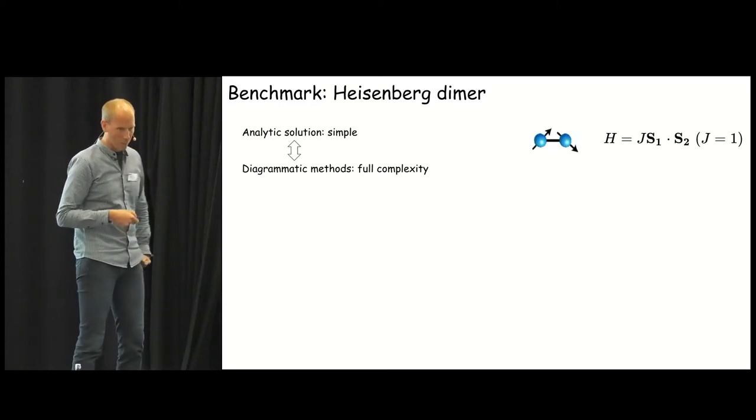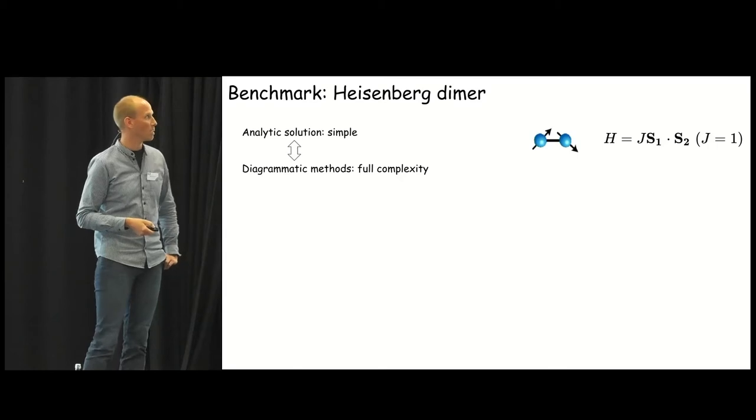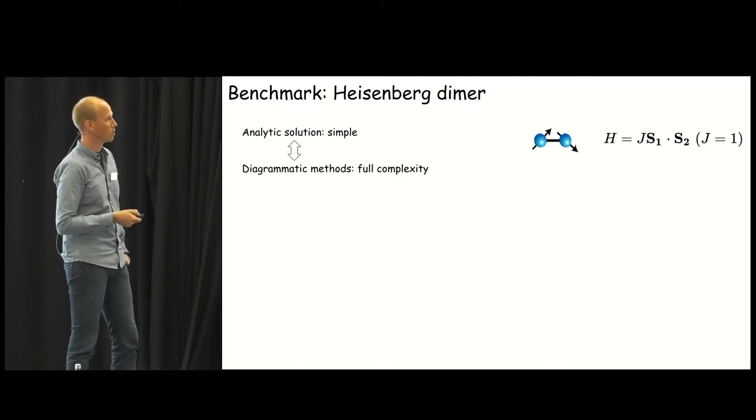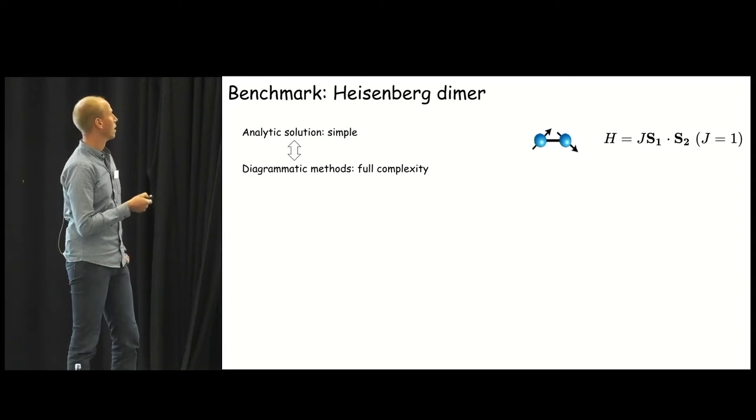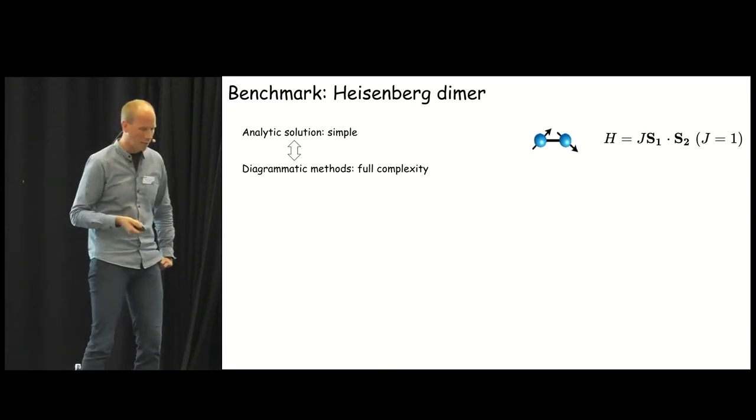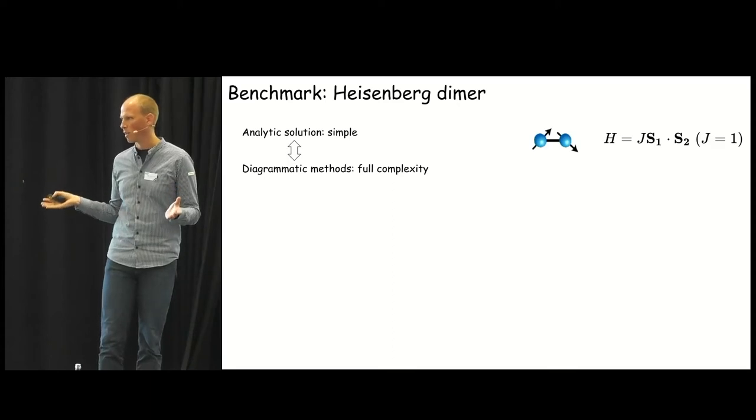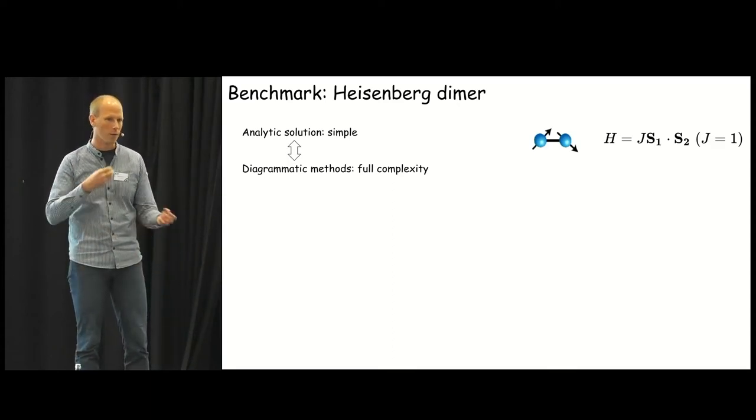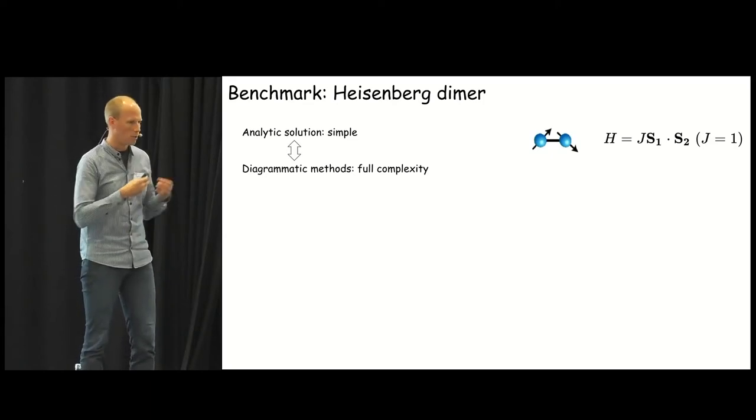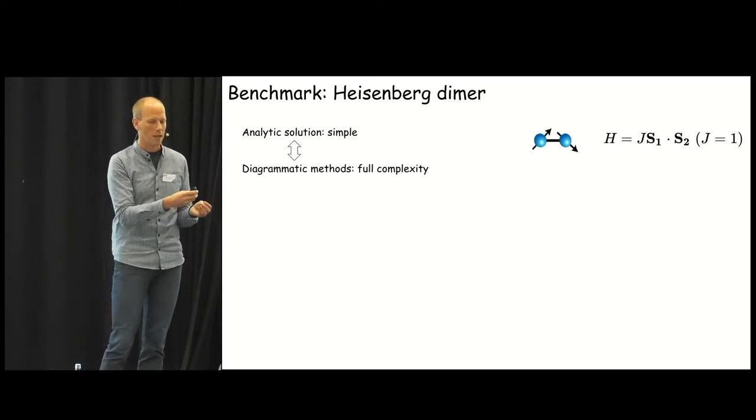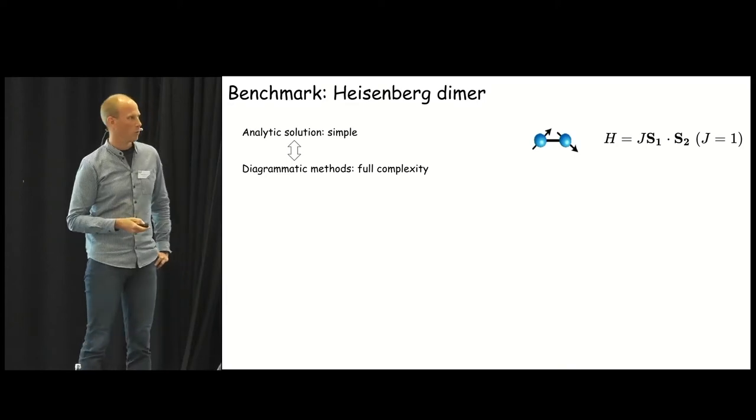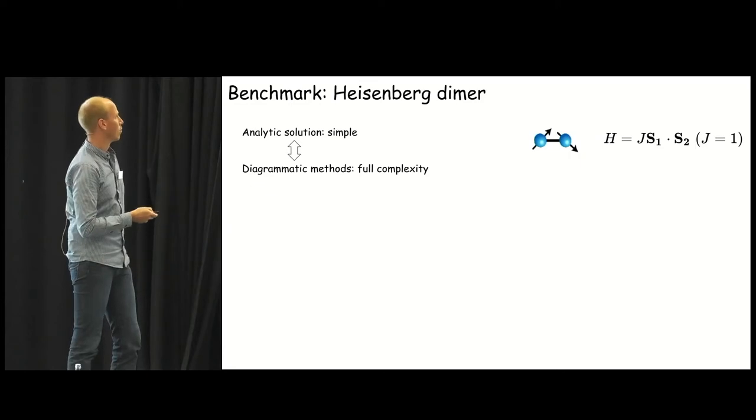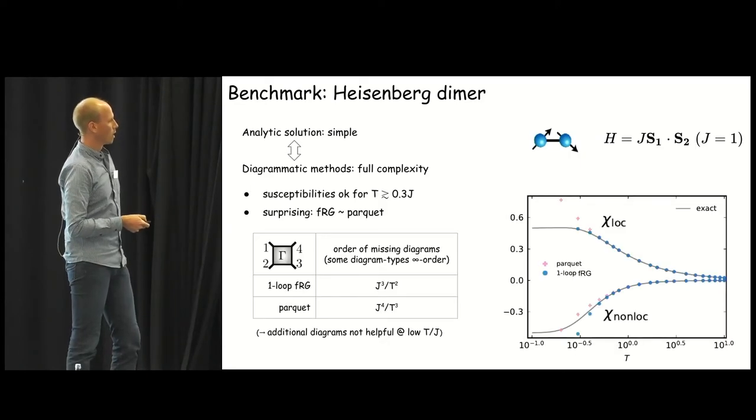Let's see how this new proposed method works for a very simple system, the Heisenberg dimer again. And now you might scratch your head and say, well, the Heisenberg dimer, isn't that a bit too simple? Yes, it's a very simple system, very small Hilbert space, and the analytic solution can be obtained in two lines. But for these diagrammatic methods, it's as complicated as the huge, say, Pyrochlor lattice. Because all the frequencies are there, all the diagrams are there. It's just that the lattice is a bit different. So it's an excellent benchmarking case for our new diagrammatic methods.